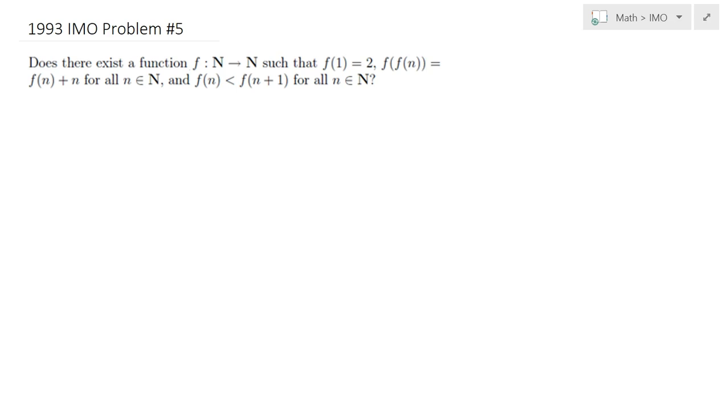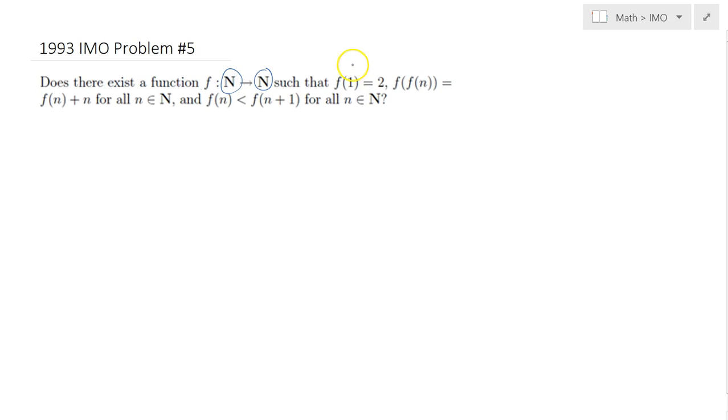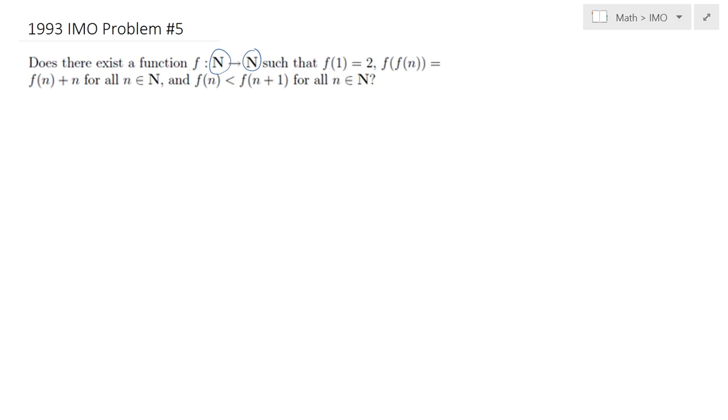We would like to construct a function defined on natural numbers with natural number values such that f(1) equals 2, f(f(n)) equals f(n) plus n for all natural numbers n, and the function is strictly increasing for all n.